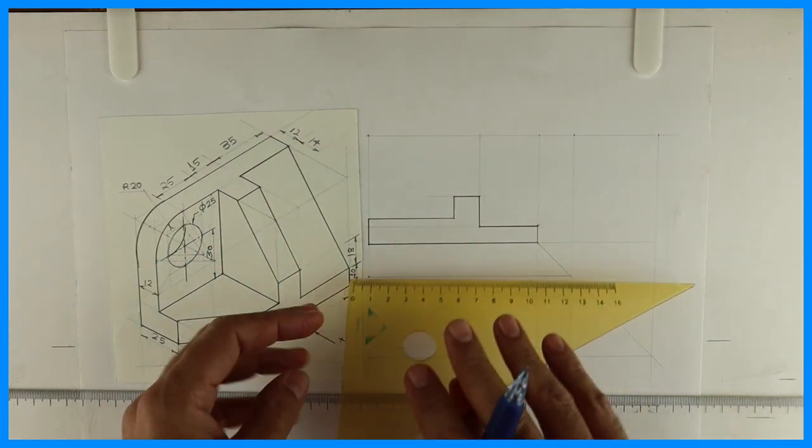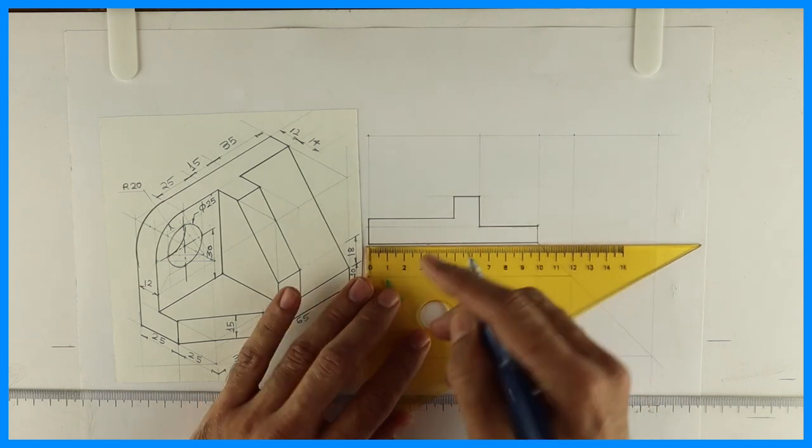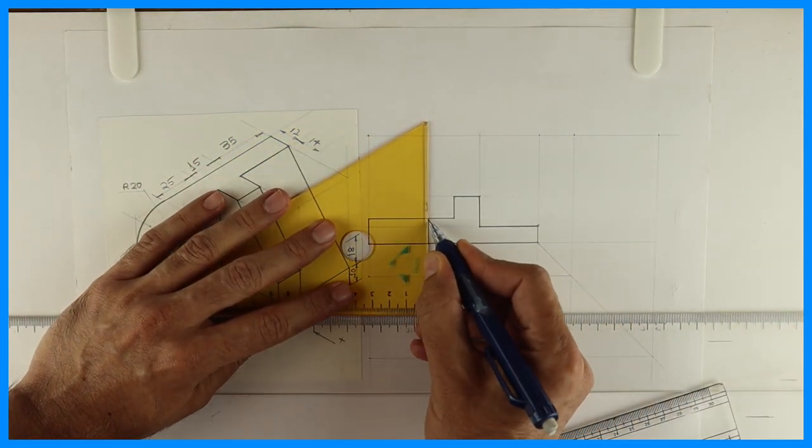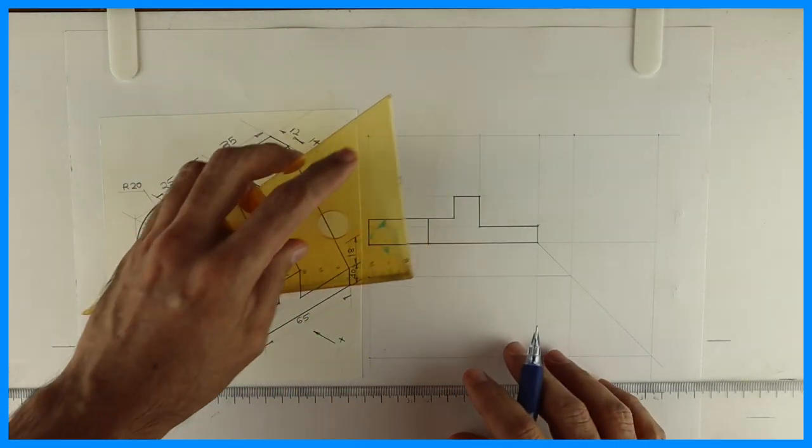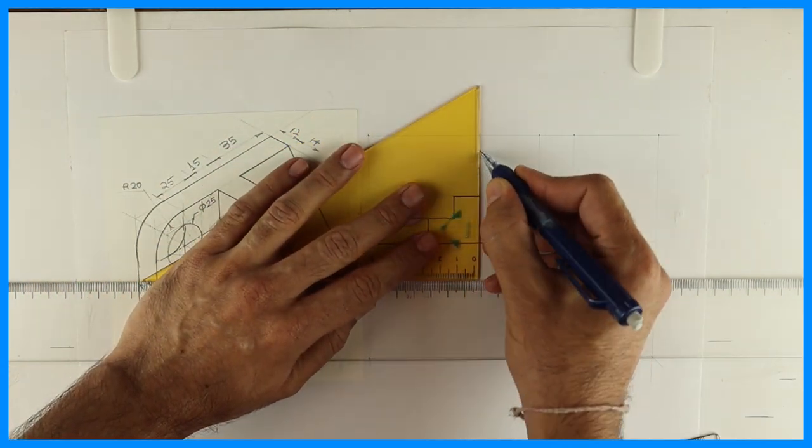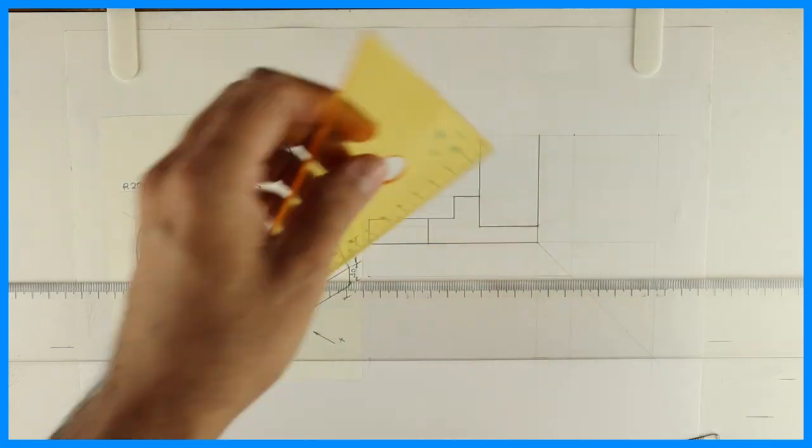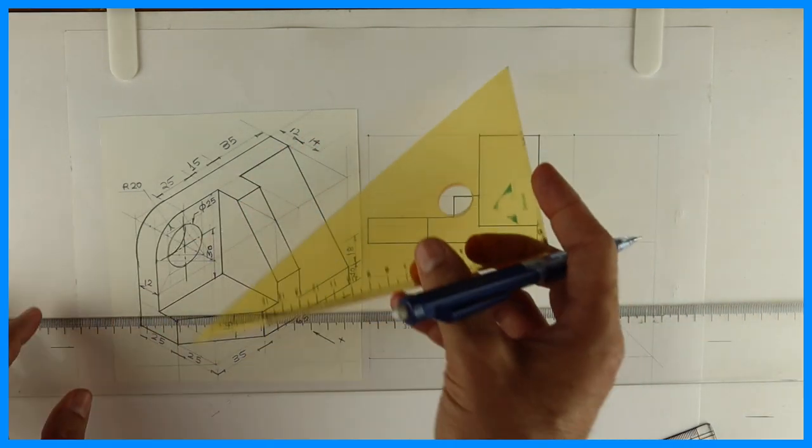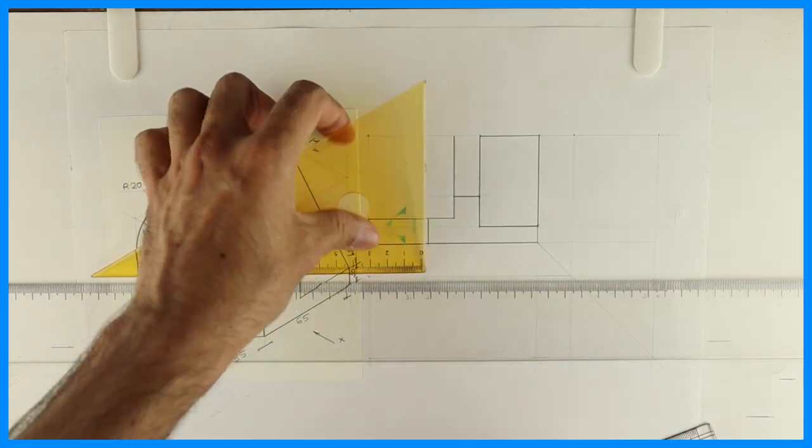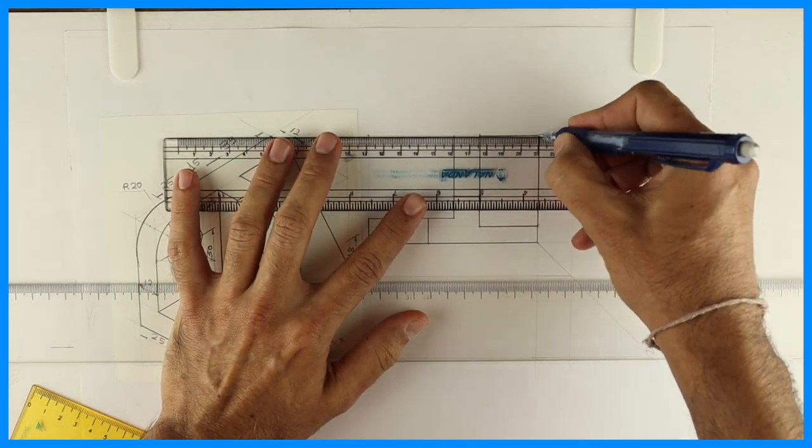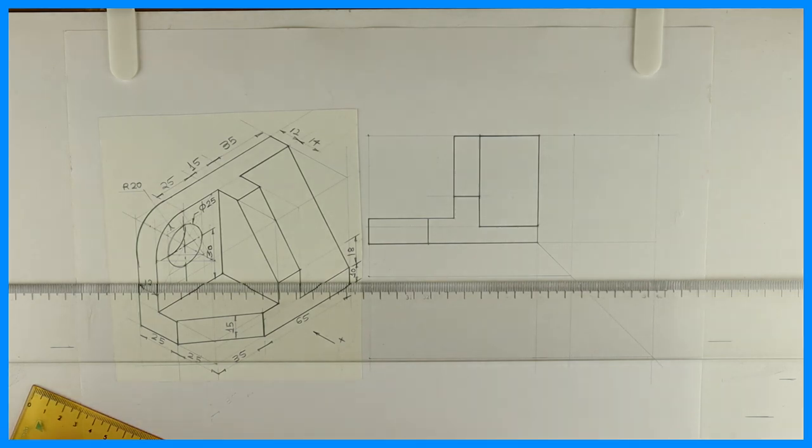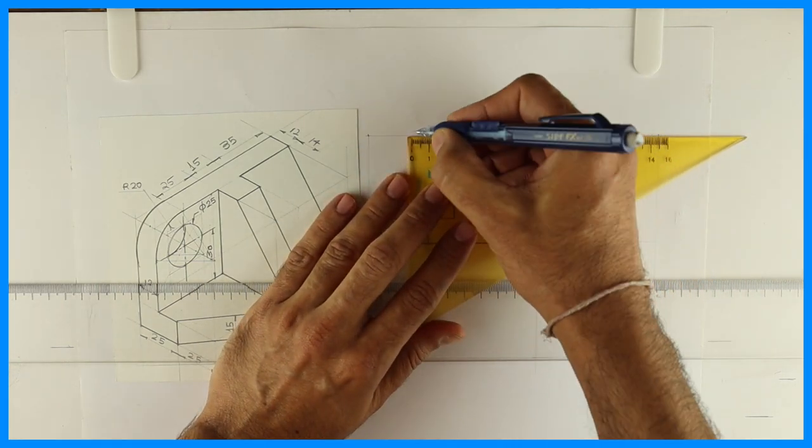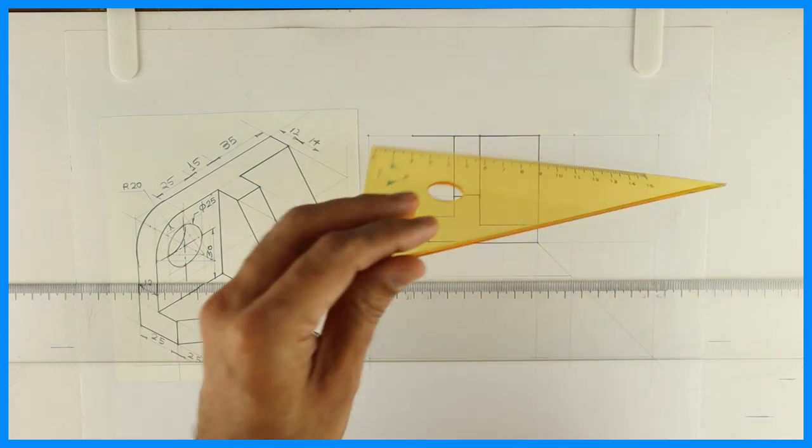This part is done. This line will be dark. Now there will be one more line in this block at 35. After that, this is the entire rectangle. Through this there will be a circle.